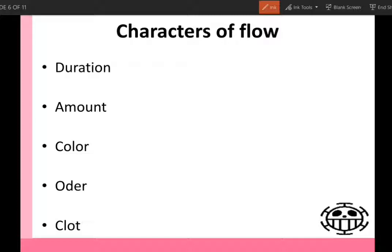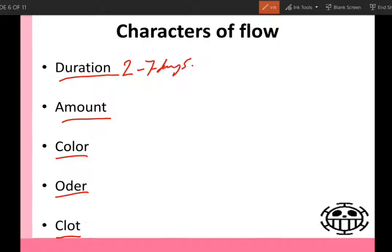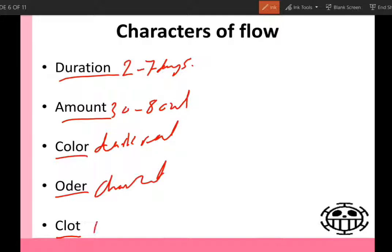Characters of flow. We should ask about the duration, amount, color, odor, and clot. The duration normally is from two to seven days of bleeding through the vagina. The amount normally from 30 to 80 ml total volume. The color is normally dark red. The odor has a characteristic odor, and normally there is no clot due to the fibrinolytic action of the endometrium.